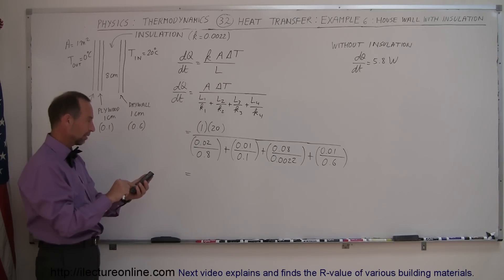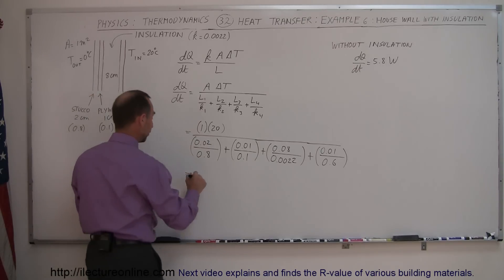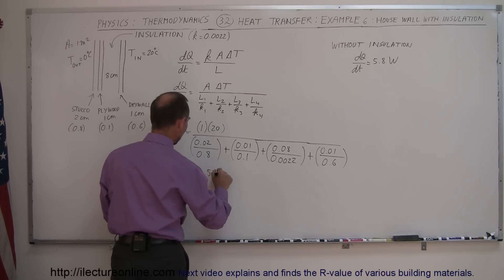0.02 divided by 0.8 plus 0.01 divided by 0.1 plus 0.08 divided by 0.0022 plus 0.01 divided by 0.6 equals. And I got the same value, so I probably didn't make a mistake. And on times 20 equals 0.55 joules per second or watts.